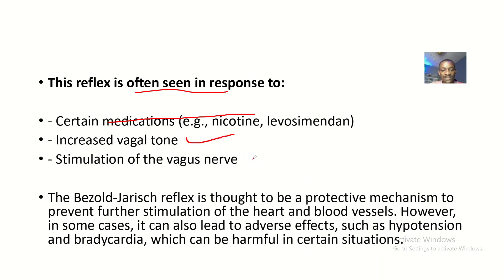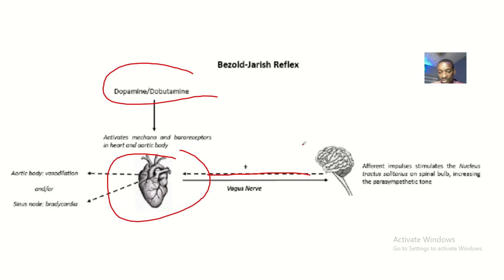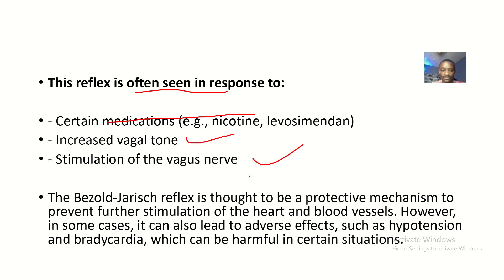There is stimulation of the vagus nerve involved. The basal gyrus reflex is thought to be a protective mechanism to prevent further stimulation of the heart and blood vessels.